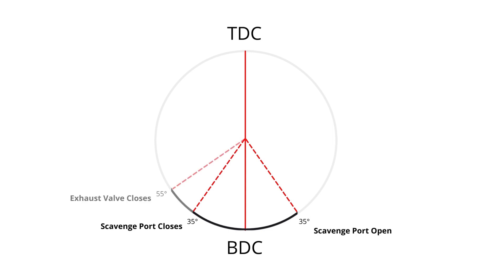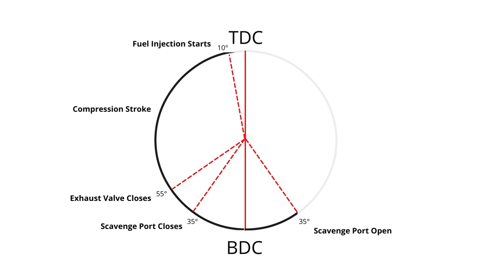The piston travels further up and the exhaust valve closes at 55 degrees above BDC. While the piston is traveling up, fuel injection starts at 10 degrees before TDC. The compression stroke ends at TDC, while fuel injection ends at 30 degrees after TDC.